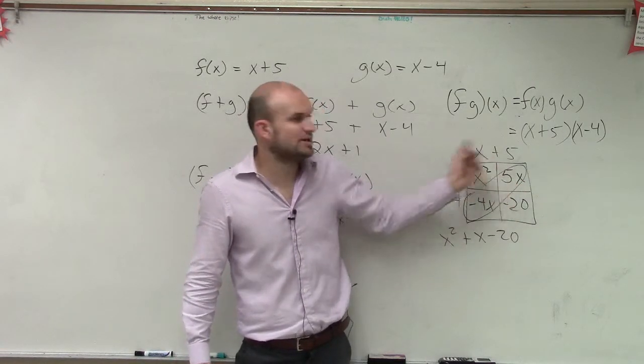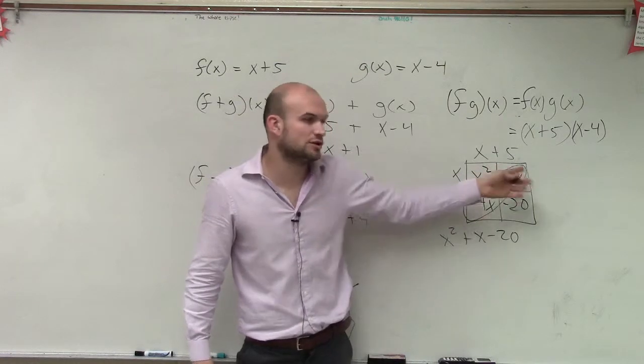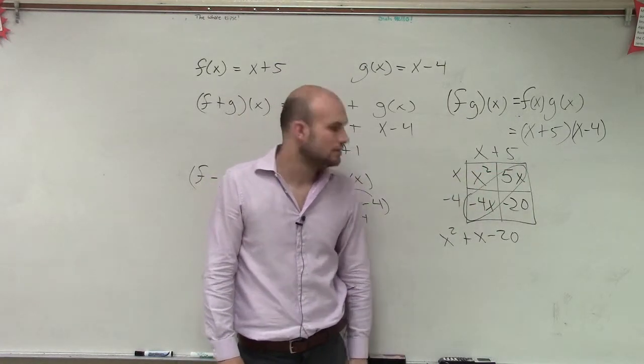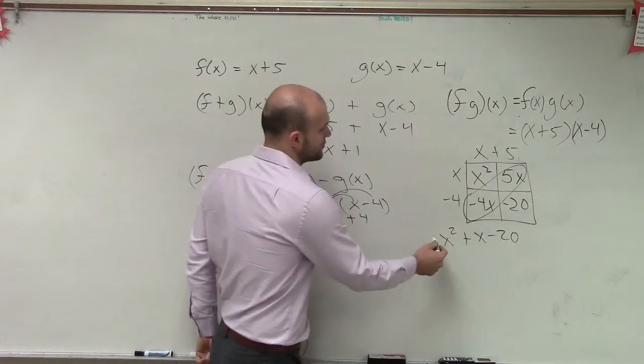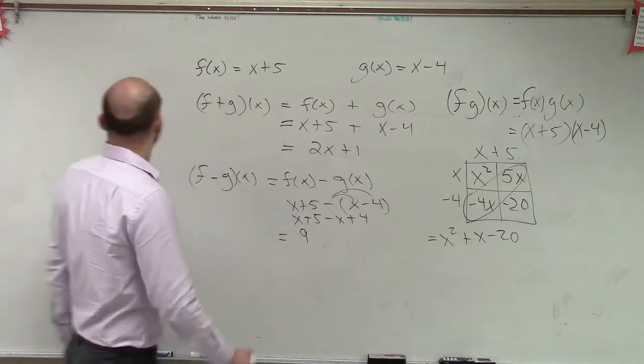I mean, you could rewrite this and it wouldn't be like that. But these are the only two you can combine. Okay? So therefore, f times g of x equals x squared plus x minus 20.